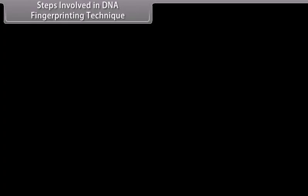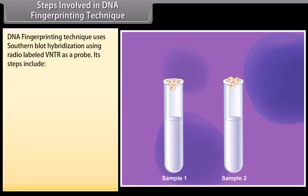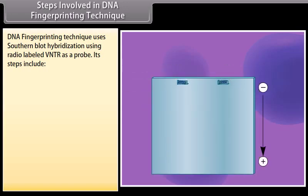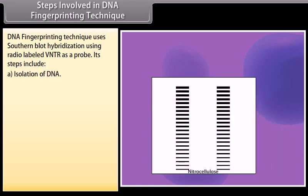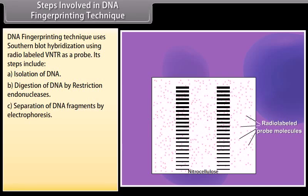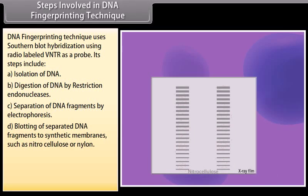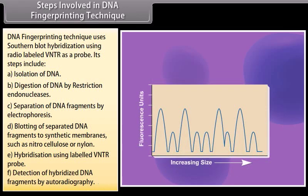Steps involved in DNA fingerprinting technique. DNA fingerprinting uses Southern blot hybridization with radio-labeled VNTR as a probe. Its steps include: A. Isolation of DNA; B. Digestion of DNA by restriction endonucleases; C. Separation of DNA fragments by electrophoresis; D. Blotting of separated DNA fragments to synthetic membranes such as nitrocellulose or nylon; E. Hybridization using labeled VNTR probe; F. Detection of hybridized DNA fragments by autoradiography.